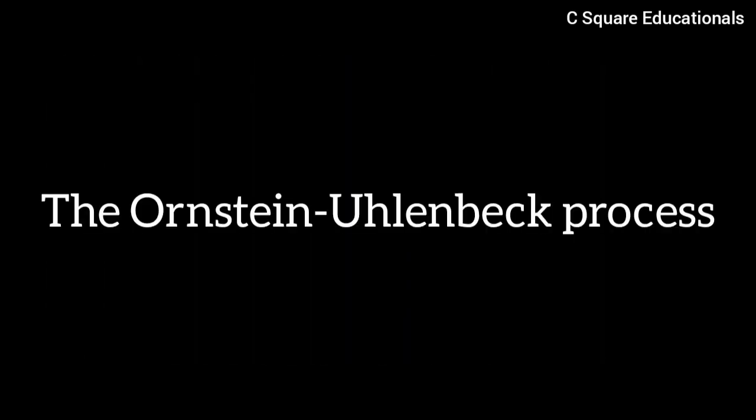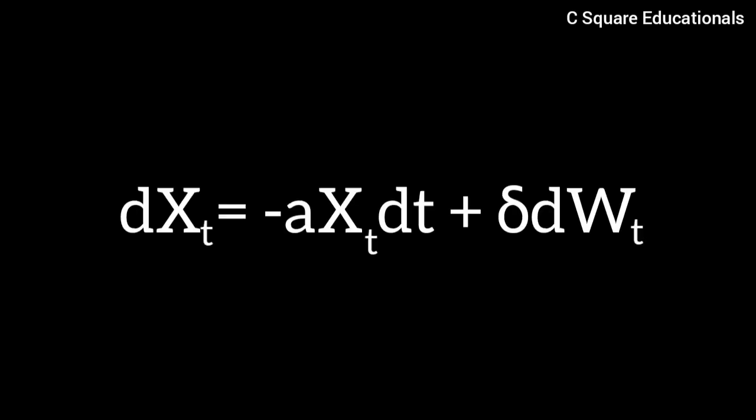The Einstein-Uhlenbeck process is defined as dX_t equivalent to negative a X_t dt plus sigma dW_t with a greater than zero.